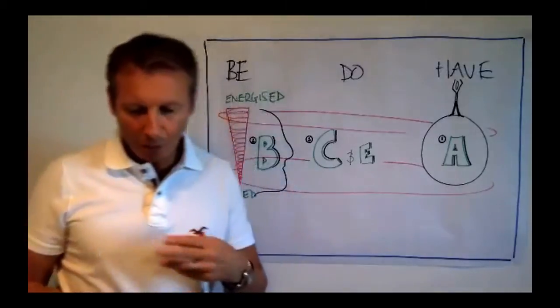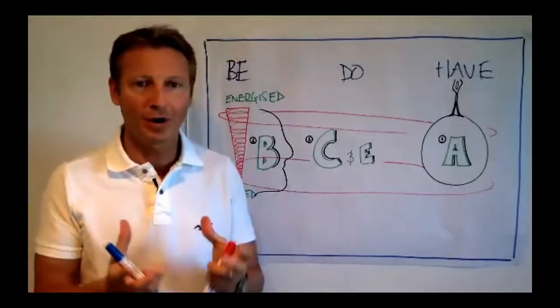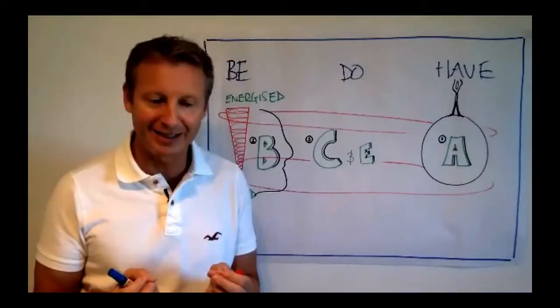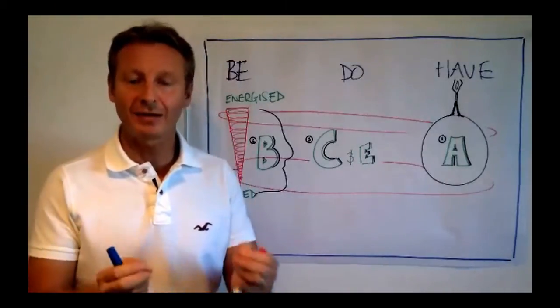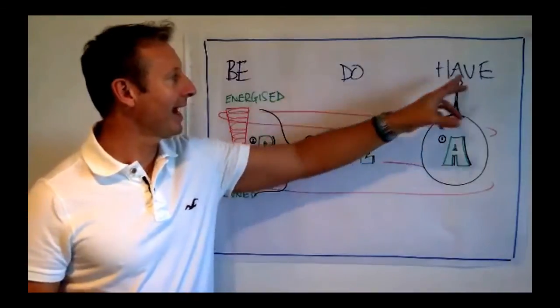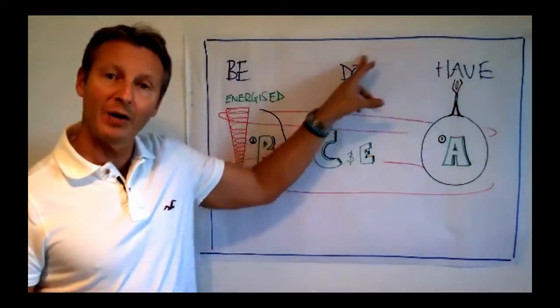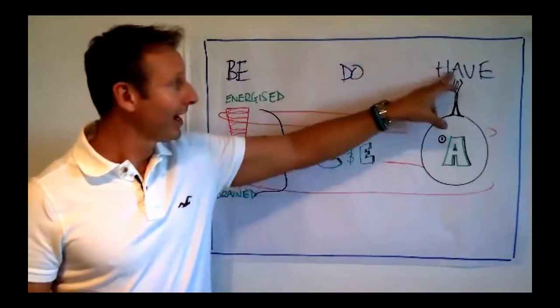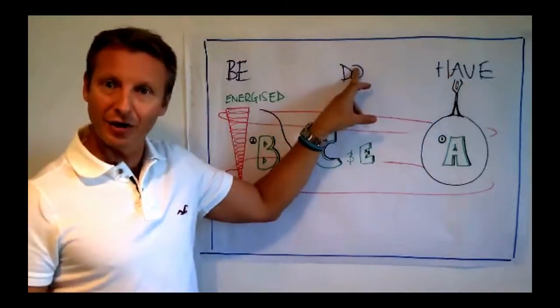Now, here's the way we're conditioned, the way that the subconscious, for most of us, has been conditioned to get the things that we want in life. We think about what we want to have, and then we go about doing to get it. So I want to have money, so I'll go get a job,